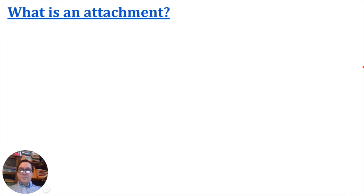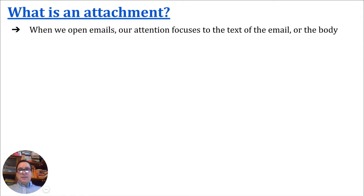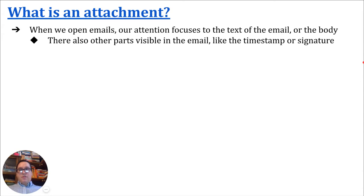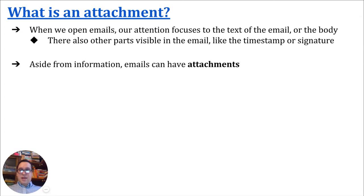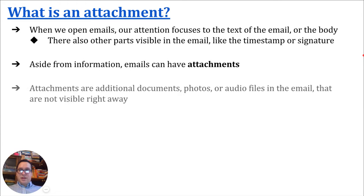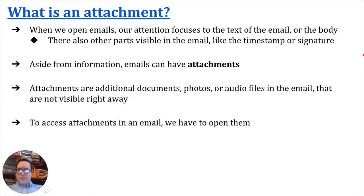So what is an attachment? When we open emails, our attention focuses to the text of the email or the body. But there are also other parts visible in that email, like a timestamp or signature. And aside from that information, emails can also have attachments. Attachments are additional documents — they can be photos or audio files as well — that are in that email. And they're not exactly visible right away. To access an attachment in an email, you do have to click to open the attachment.